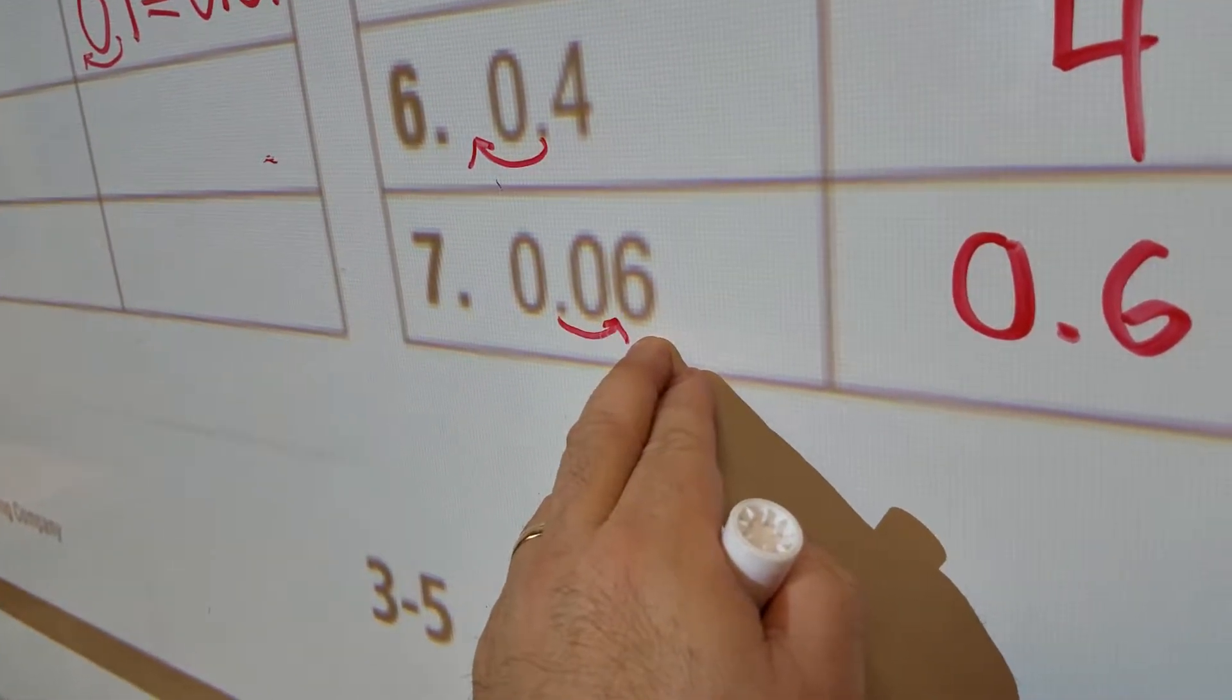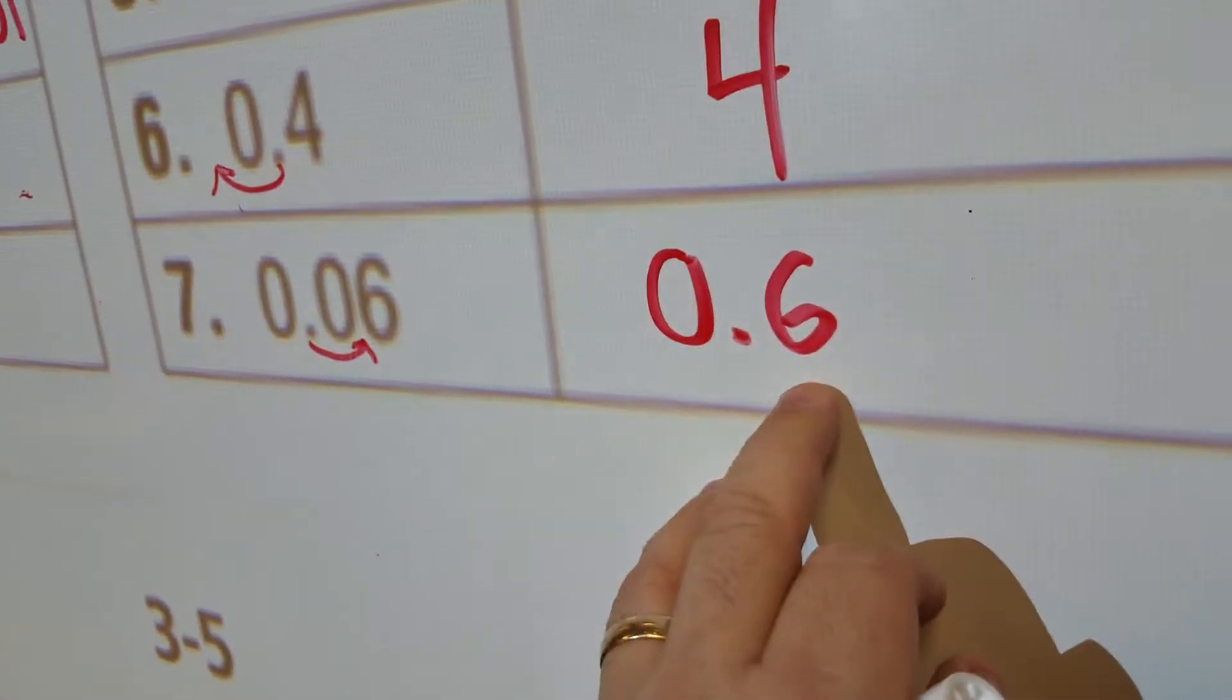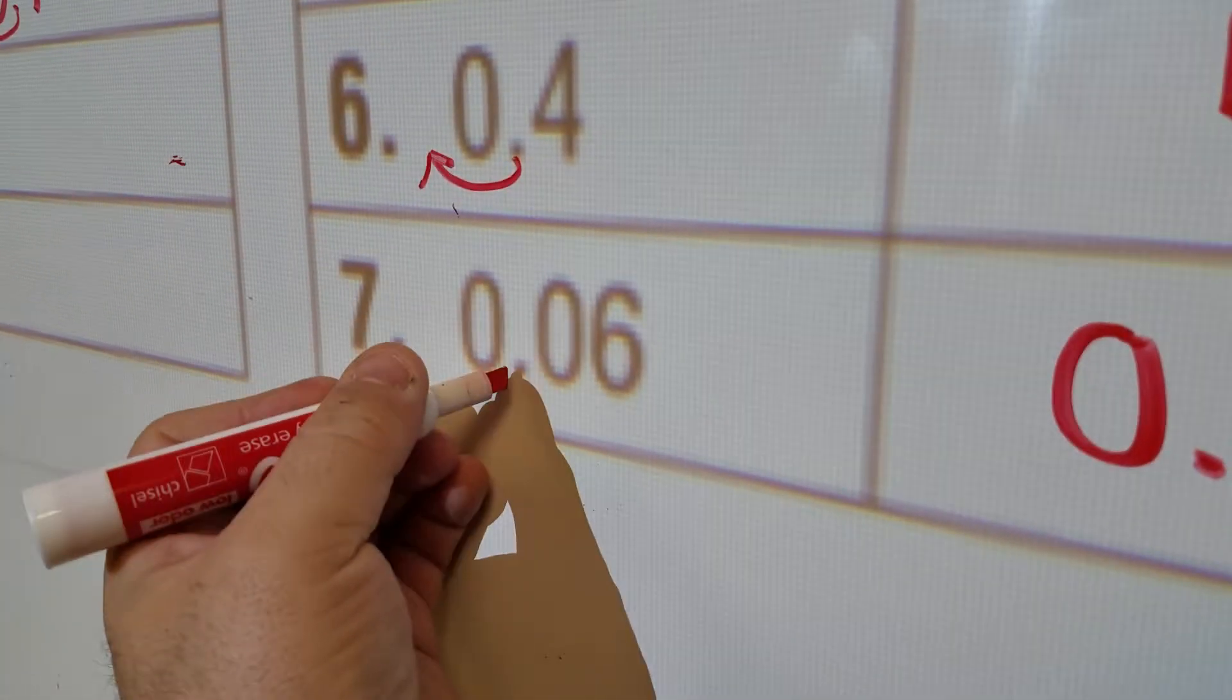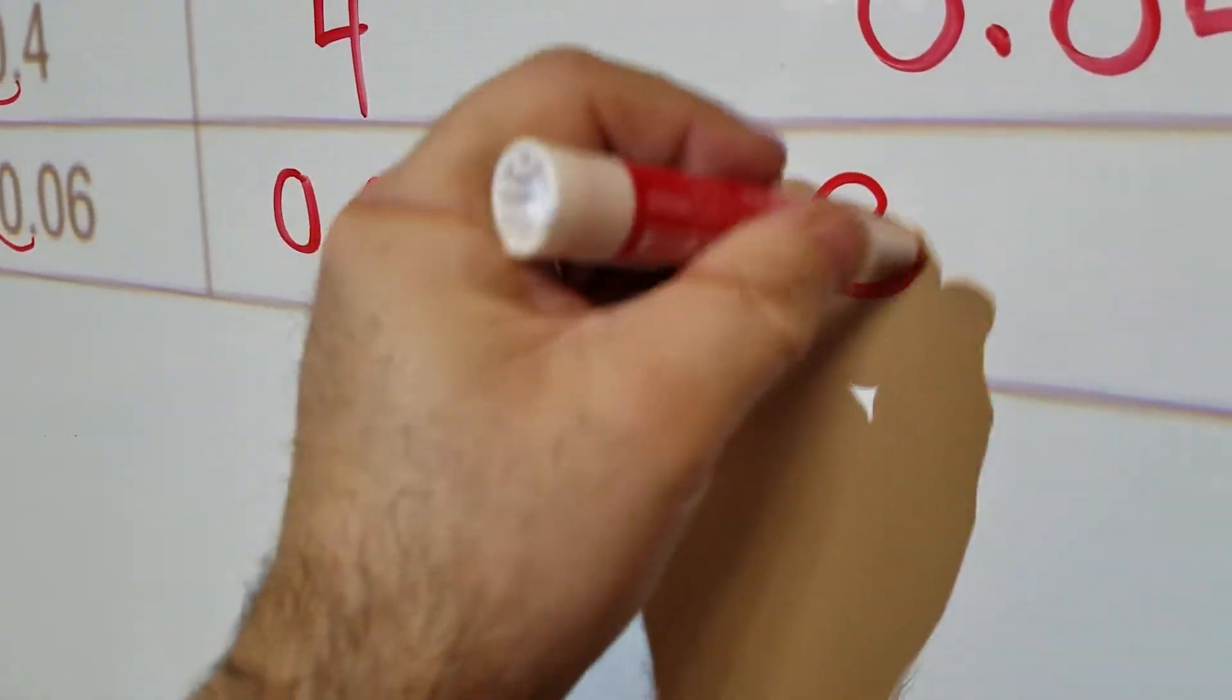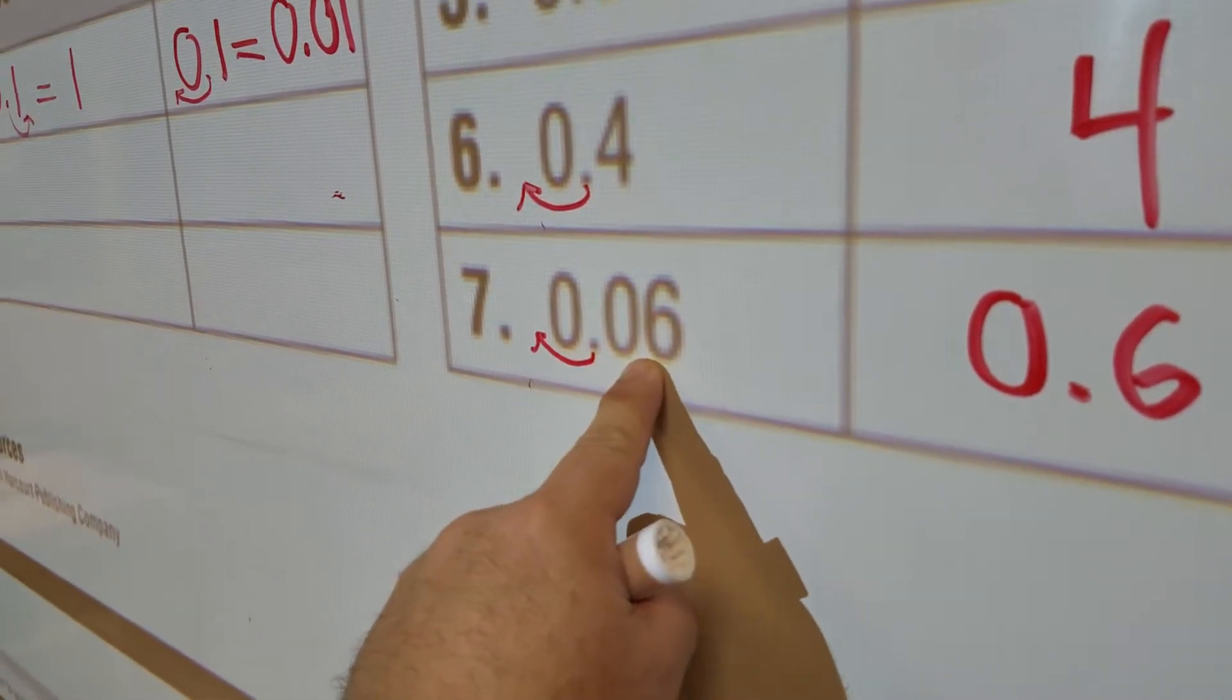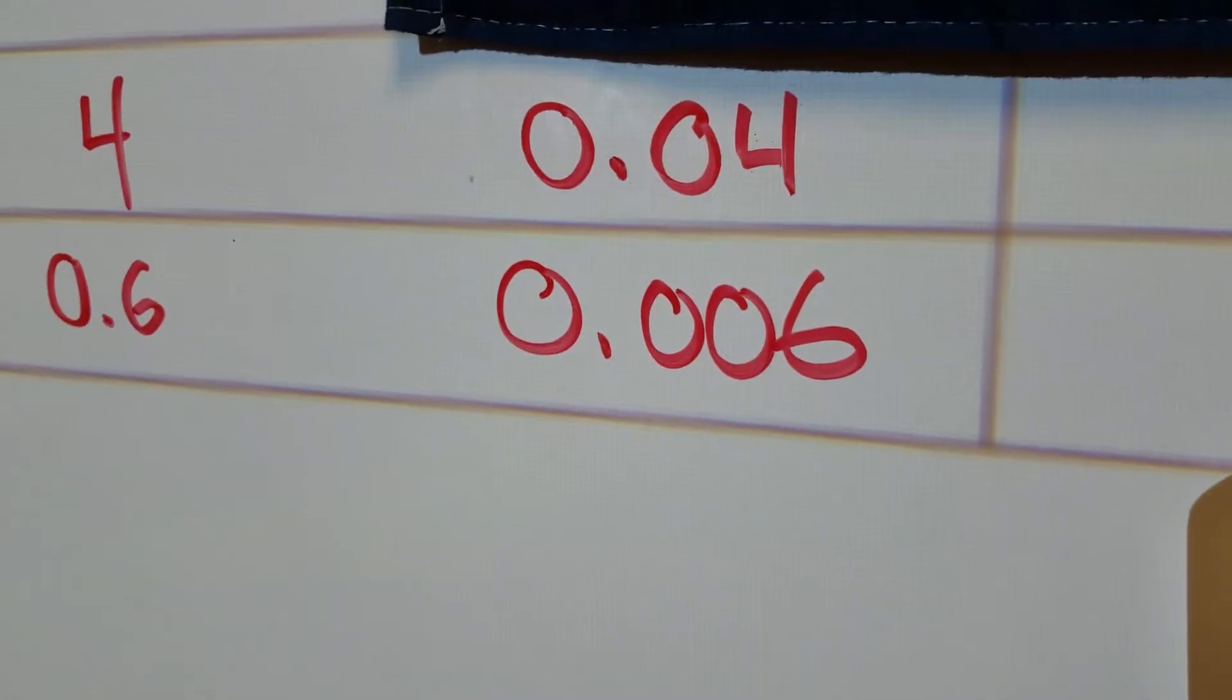Think money. 10 times as much as 6 pennies? Well, 6 pennies times 10 would be 60 cents or 0.6. Now, what if we're going to the left? What's 1 tenth? I take my decimal, move it over one spot, and I got 0.006. 1 tenth, if we could cut a penny into 10 pieces, well, 1 tenth of 6 hundredths would give us 6 thousandths.